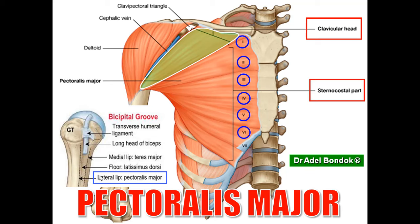Regarding the action: any muscle attached to the bicipital groove adducts and medially rotates the arm. If the muscle is coming from the front, like the pectoralis major, it flexes the shoulder joint. If it is coming from the back, it extends the shoulder joint. Therefore, the pectoralis major has three actions: adduction of the arm, medial rotation of the arm, and flexion of the arm.